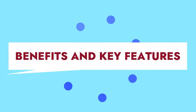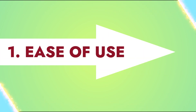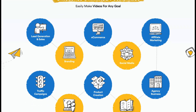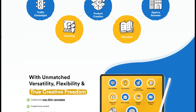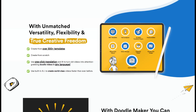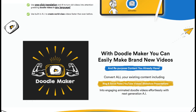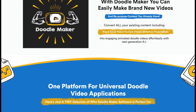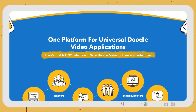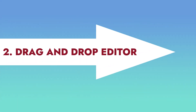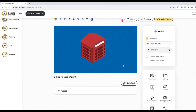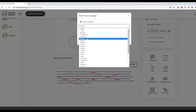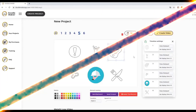Benefits and key features of DoodleMaker. One: ease of use. DoodleMaker is easy to navigate, and the process of creating videos is straightforward, even for newbies. The sketch-to-video feature also makes it easy to create engaging whiteboard animation videos in minutes. Two: drag-and-drop editor. The drag-and-drop editor makes it simple to add photos, text, music, and voiceovers to your doodle videos, making them truly unique.